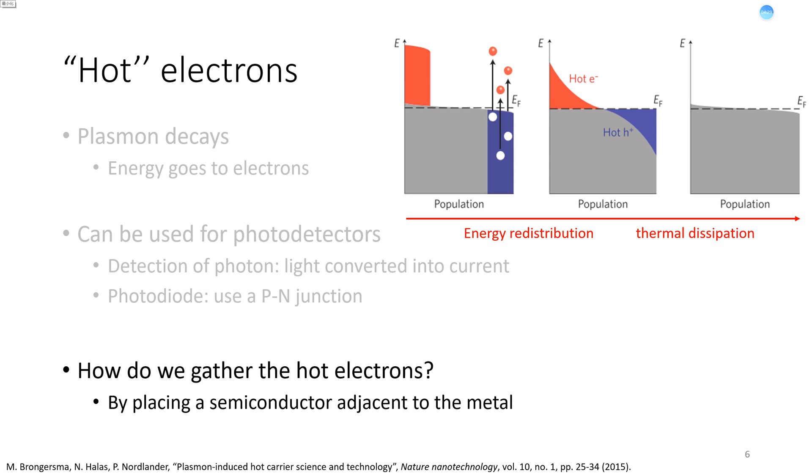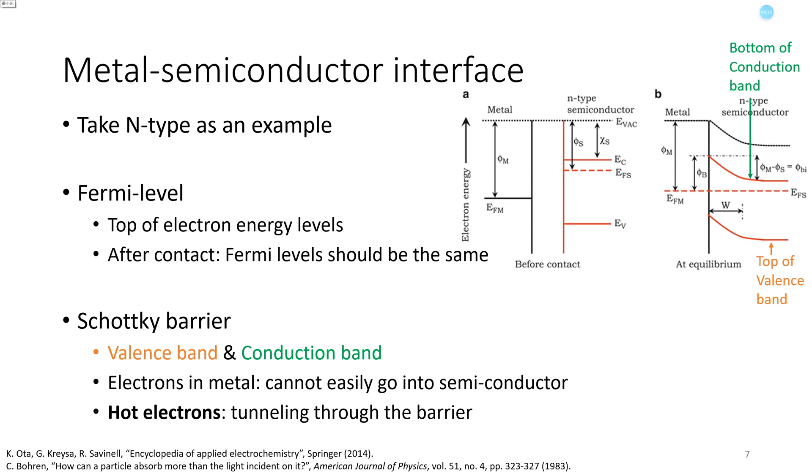So how do we collect these hot electrons before they lose their energy? Only in that way we can use it to detect photons. This is achieved by placing semiconductor very close to the metal. Let's take N-type semiconductor as an example. Before contact the Fermi level inside metal and semiconductor are not necessarily the same. However after contact, these two should match, which results in the bending of energy bands near the interface.